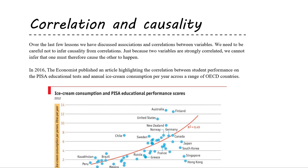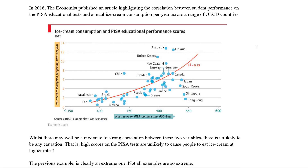We need to be careful about our language when we talk about these associations. As an example, in 2016 The Economist published an article highlighting the correlation between student performance on the PISA educational tests and annual ice cream consumption per year across a range of OECD countries. The graph shows an R-squared — a coefficient of determination — of 0.49, which gives a correlation coefficient r of 0.7, a moderate to strong correlation.